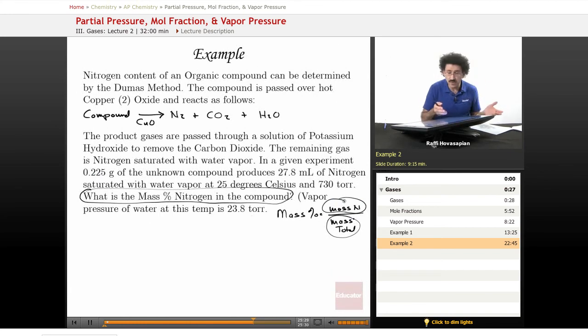So again, mass of nitrogen, chances are we're going to have to find the number of moles of nitrogen and the number of moles is going to come from the ideal gas equation. So let's just work forward.